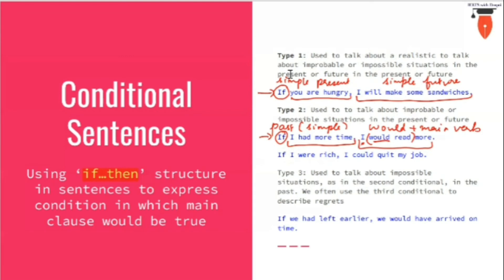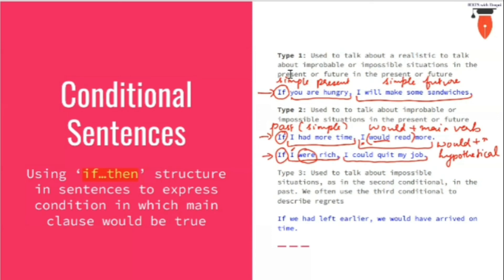Now let us look at the second type of construction here — hypothetical sentences. They are called hypothetical because they do not stand true in the present scenario. Examples include: 'If I were rich,' 'if I were taller,' 'if I were the president of the country,' 'if you were my friend.' No matter what the subject is, we always use 'were.' Even if the subject is singular, we still use 'were.' In the then clause, we can use modals like 'could' or 'would' and the main form of the verb.